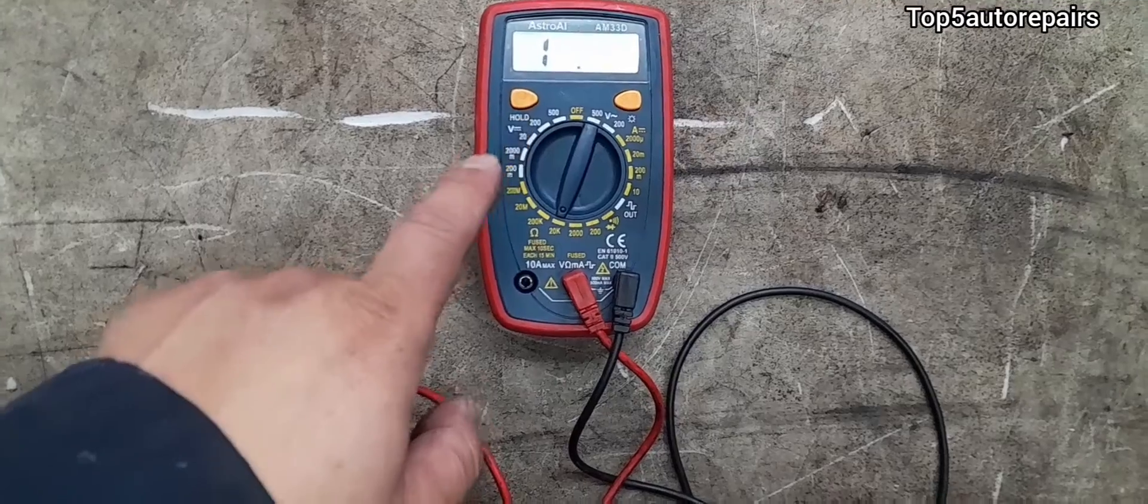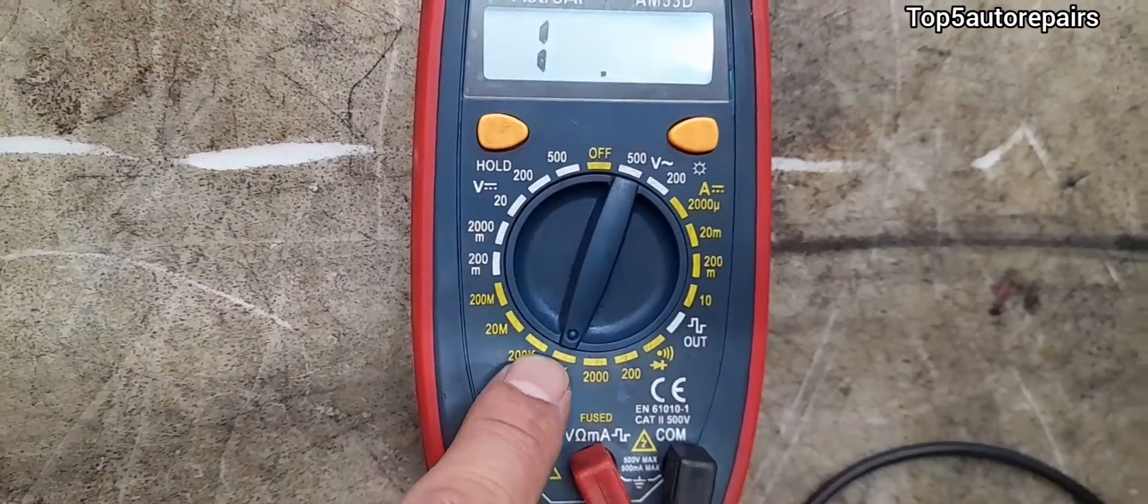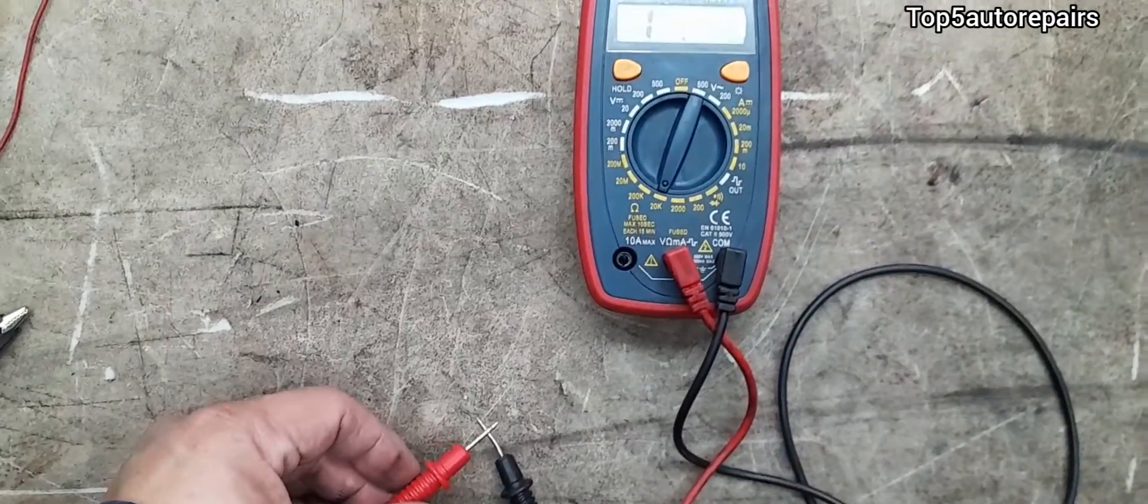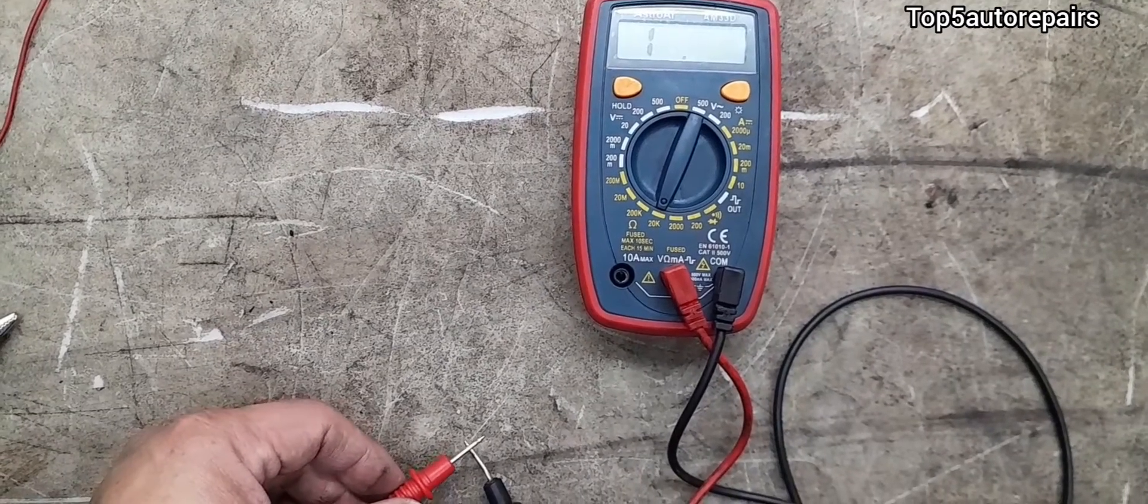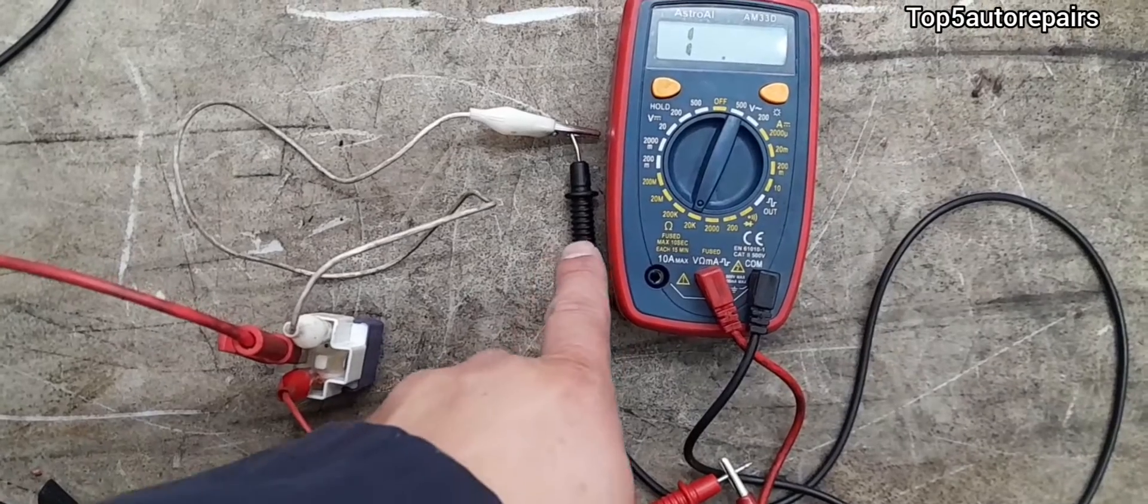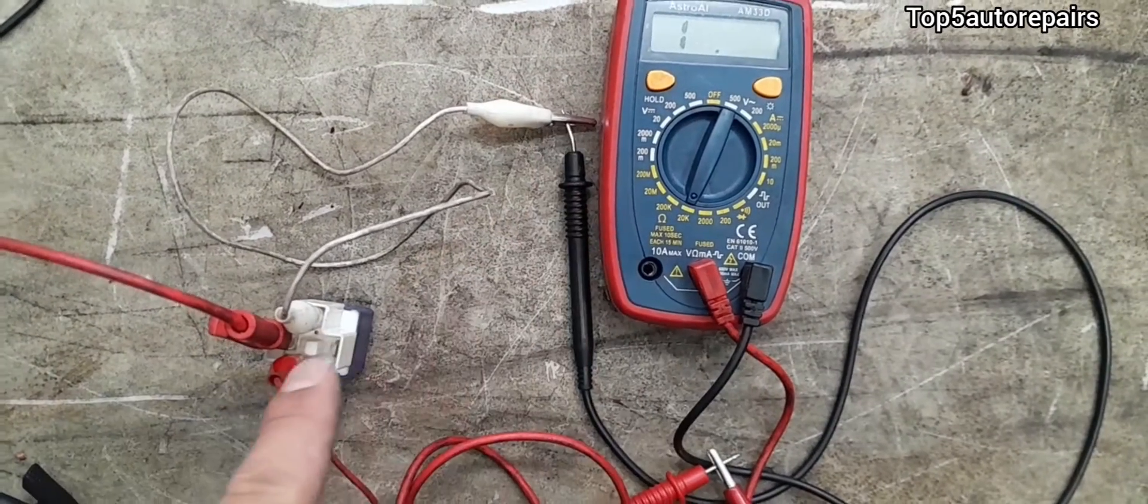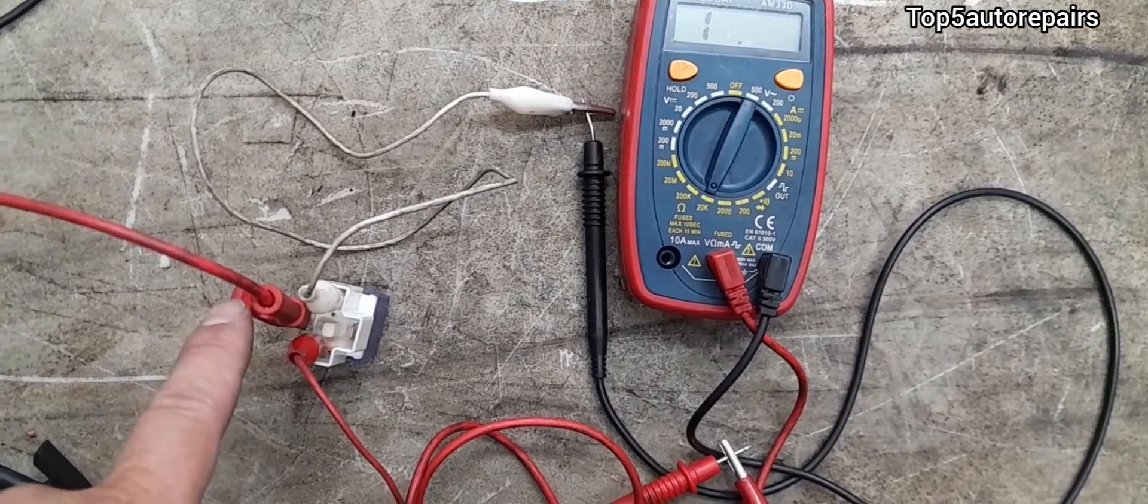Make sure to test your multimeter before testing the starter relay. First, set the multimeter to ohms. Next, take your test leads, touch them together and you should get a reading. Next, take your test leads, connect them to the jumper wires and put the jumper wires on the opposite side of where the coils are energized.